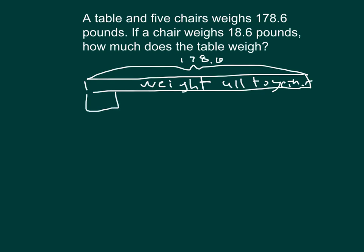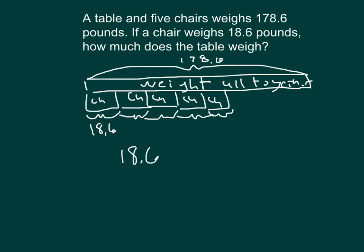So, one chair, abbreviated CH, weighs 18.6, and yet I have how many chairs? Five chairs for sure. And then so, each of those chairs also weighs that 18.6 pounds. So, I've got five chairs. Right? So what do I do with the 18.6 and five to get the total weight for all of those chairs?